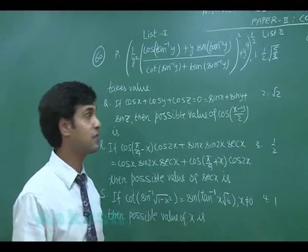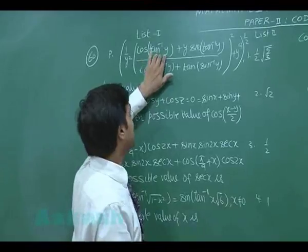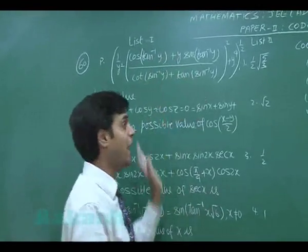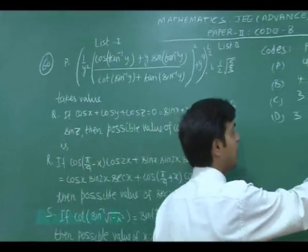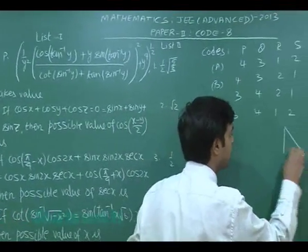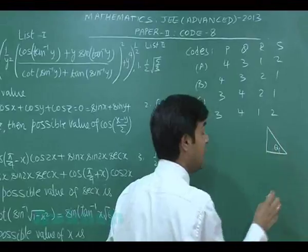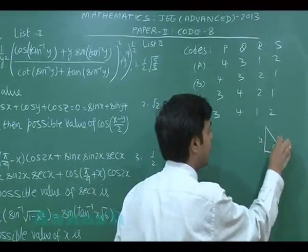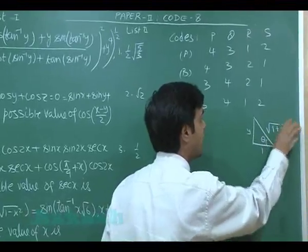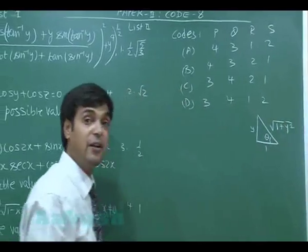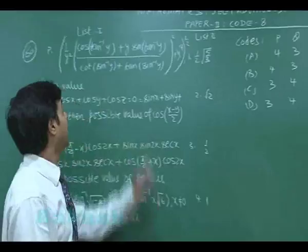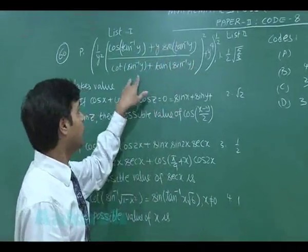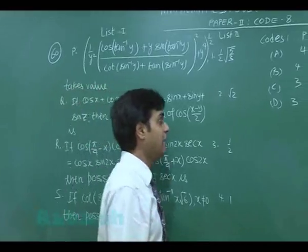For Part P, let tan⁻¹y = θ, so tan θ = y. Drawing the triangle with opposite side y and adjacent side 1 gives hypotenuse √(1 + y²). From this we get cos θ = 1/√(1 + y²) and sin θ = y/√(1 + y²), which are the values needed for the numerator.